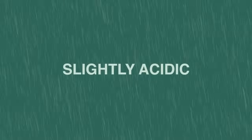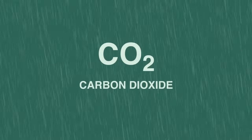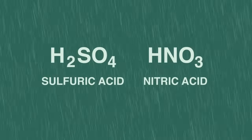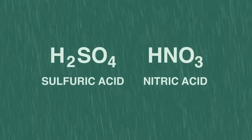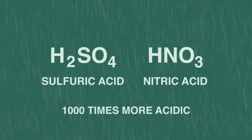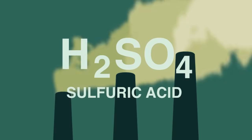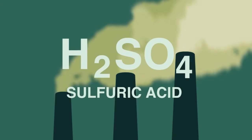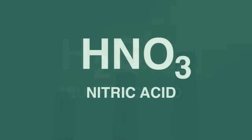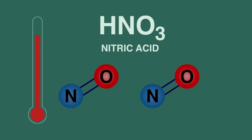So to summarise, normal rain is slightly acidic due to the dissolved carbon dioxide, but acid rain contains sulfuric and nitric acid, making the rain a thousand times more acidic and dangerous for many living things. Sulfuric acid arises from the burning of fossil fuels containing sulfur. Nitric acid arises from the combustion of atmospheric oxygen and nitrogen in the high temperature conditions in the cylinders of petrol and diesel engines.